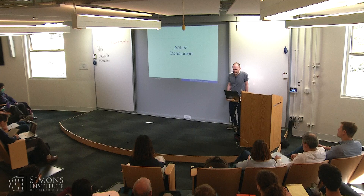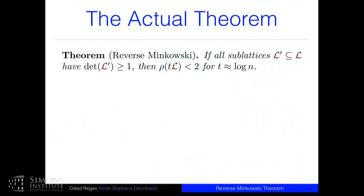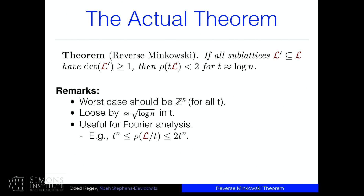This is the actual theorem: if you scale up the lattice by a log n factor, then the Gaussian mass is at most 2. Having mass at most 2 is very nice Fourier-analytically — it means the dual lattice is smooth. The conjecture is that the right parameter is exactly √(log n) times a constant, which is what you get for Z^n from the point-counting calculation. We are off by a factor of √(log n) as far as we know.